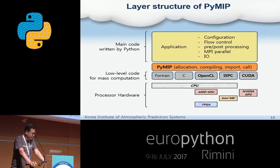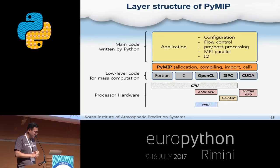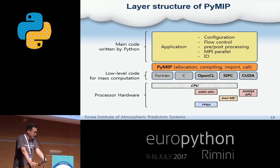This shows the schematic layer structure of PyMip. The main code of an application program is written in Python. PyMip includes the parts that have little effect on computational performance, such as configuration, flow control, pre- and post-processing, and so on. The mass computation parts are written by low-level language codes for the target processors. PyMip also manages the array variables depending on the target processor, because GPUs and Intel MIC have dedicated memory space.